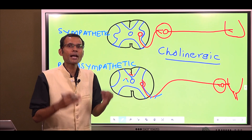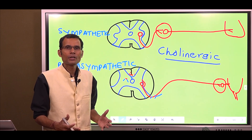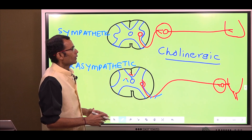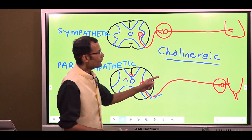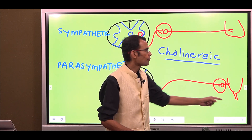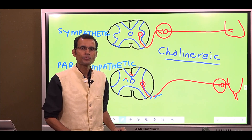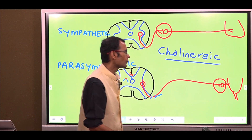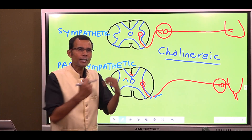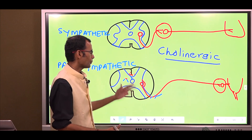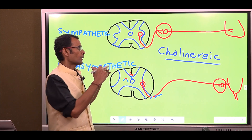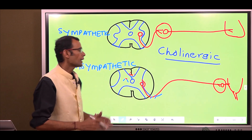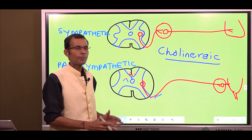Now, coming to the post-ganglionic nerves, which are the effector nerves and more important to understand. In the case of parasympathetic nerves, even the post-ganglionic nerve releases acetylcholine — so the parasympathetic post-ganglionic nerve is also a cholinergic nerve. That means acetylcholine is the effector neurotransmitter in the parasympathetic system; the effects of the parasympathetic system on the organs are exerted by acetylcholine.